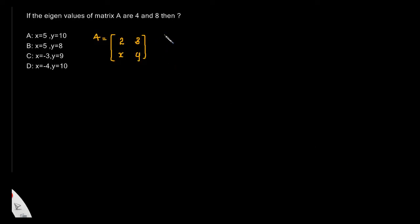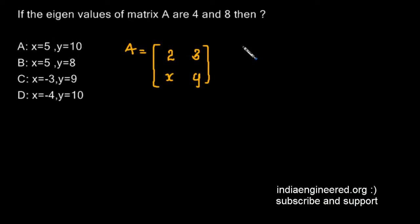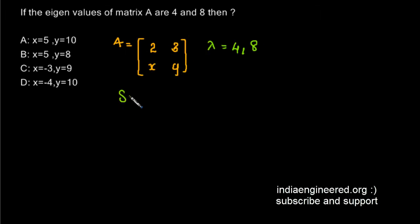This question was asked in GATE. If the eigenvalues of matrix A are 4 and 8, then we have to find out the value of x and y. We are given the matrix and its eigenvalues. Eigenvalues are 4 and 8. Now we are asked to find out the values of x and y.